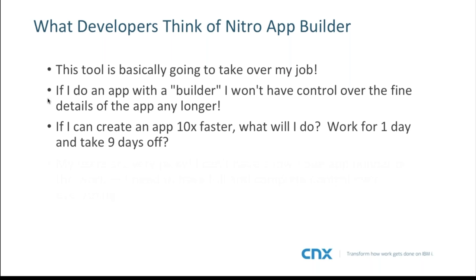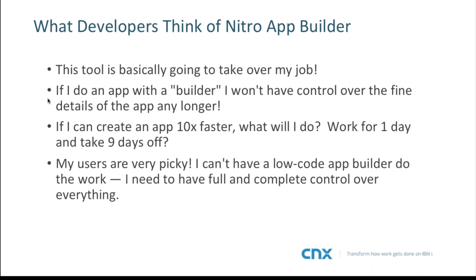The reality is if you can do work faster, you're just going to have more work to do. Your workload will not decrease — you're just going to be able to produce a lot more apps and more useful stuff for your end users. We've seen this time and time again: when users start getting apps, they just ask for more. Users don't ask for much because they know you're busy and they've already asked for things they haven't gotten. But when you start delivering quickly they ask for more. If you really need to do a manual application for fine detail that Nitro App Builder can't do, at least you can develop a Nitro app for them immediately while they wait for the other app.